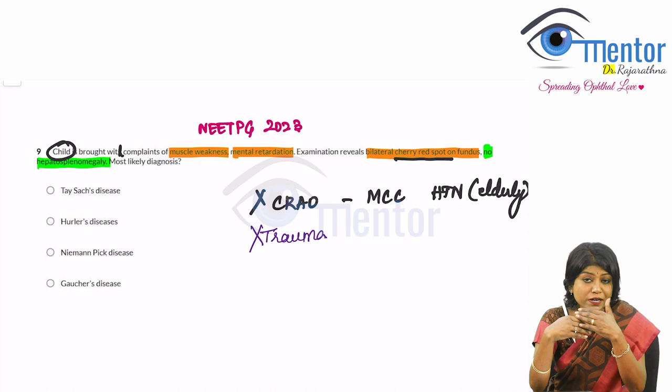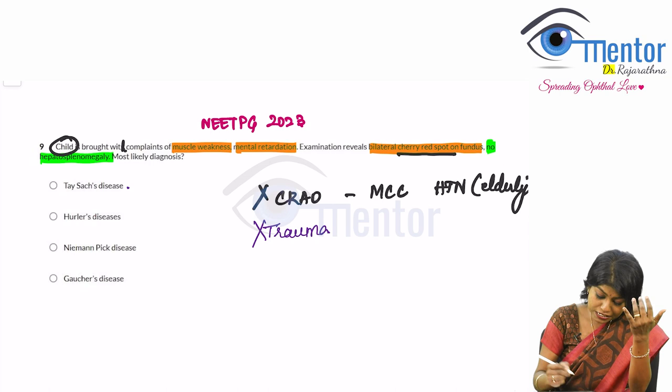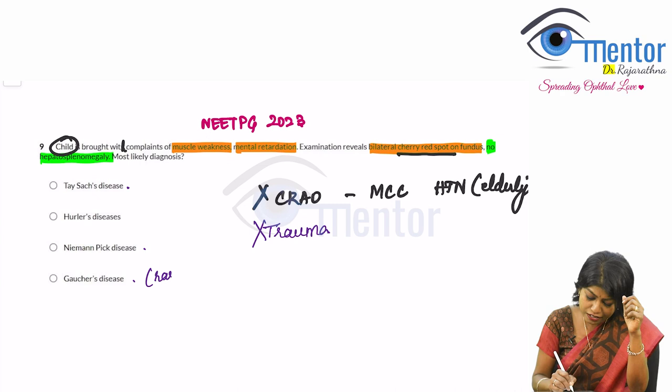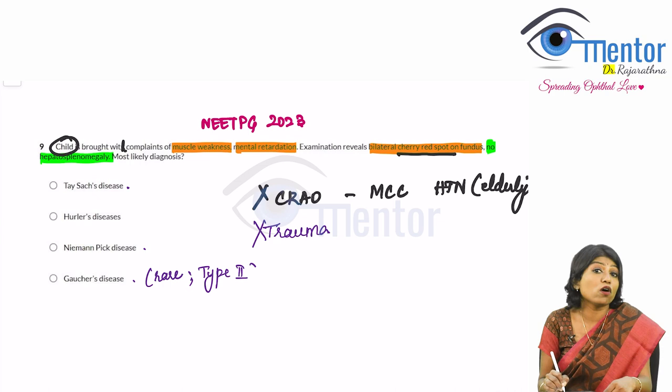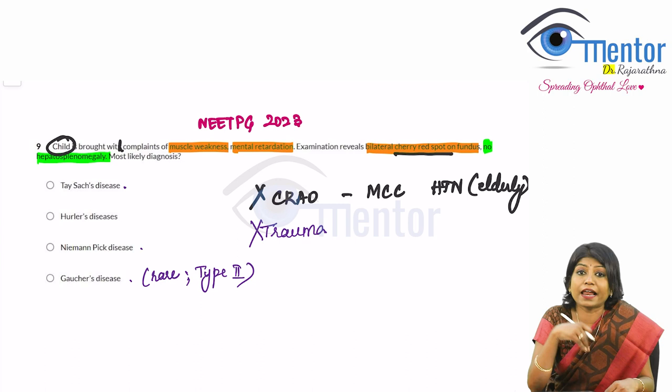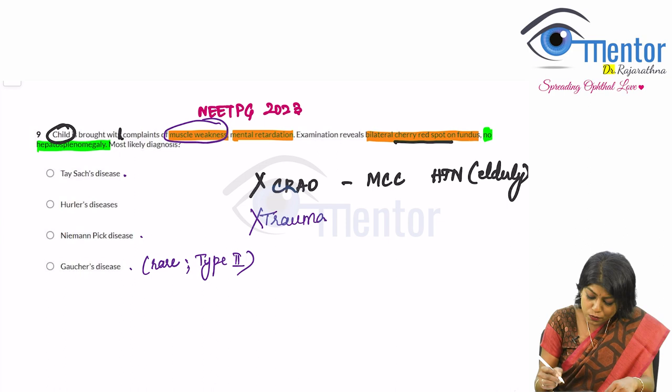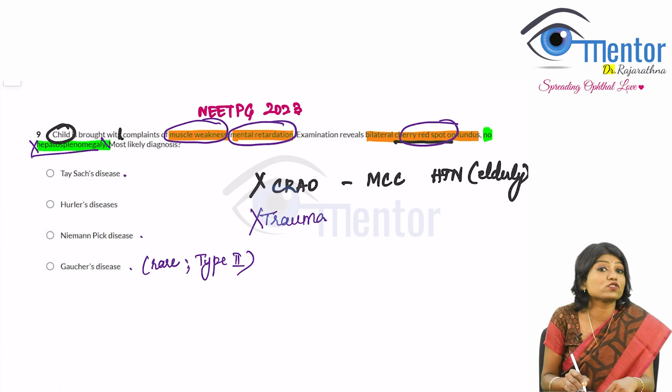So it has to be one of the storage disorders. Let's look at Tay-Sachs, Niemann-Pick, and Gaucher's. Gaucher's with cherry red spot is relatively rare, seen only in the rarer type 2 subtype. The key clinical features to keep in mind from the question are: muscle weakness, mental retardation, cherry red spot, and no hepatosplenomegaly.